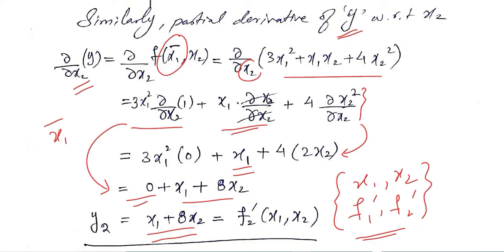This is the basic concept of partial derivatives and how we can solve them numerically once we are given a function with more than one independent variable — in this case, x1 and x2. Definitely you can generalize this to any number of independent variables, let us say xn. Thank you.